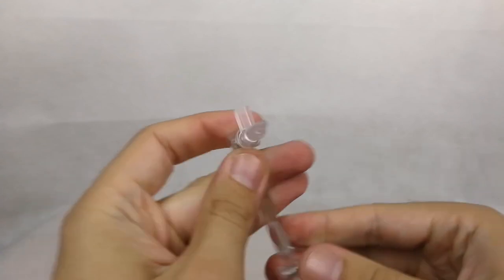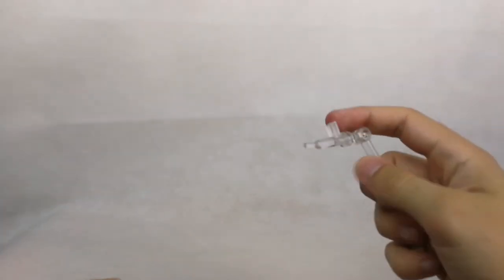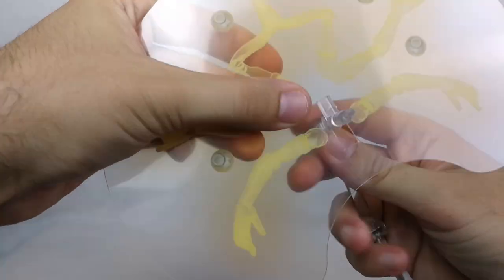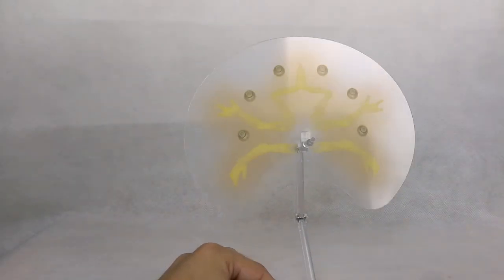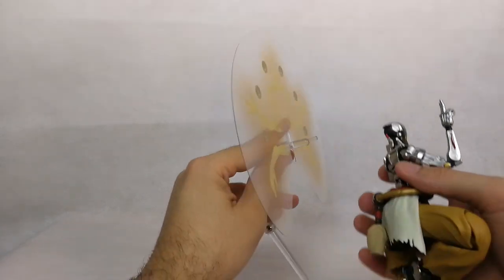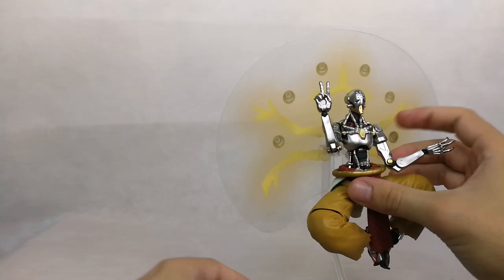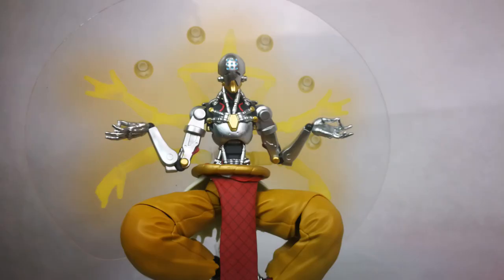So we have this new adapter that allows us to put in his ultimate. Speaking of his ultimate, so we have that adapter part in so we can connect this effect part right here. So that's supposed to be his transcendence, and now we can plug the stand on his back and that's it. We got ourselves his ultimate. As you can see it can look very cool.